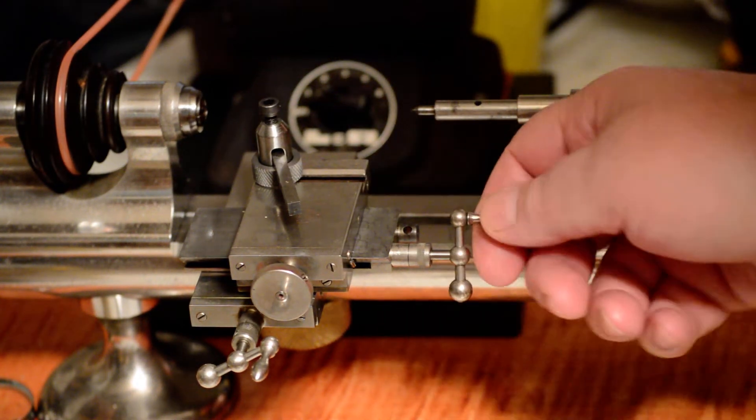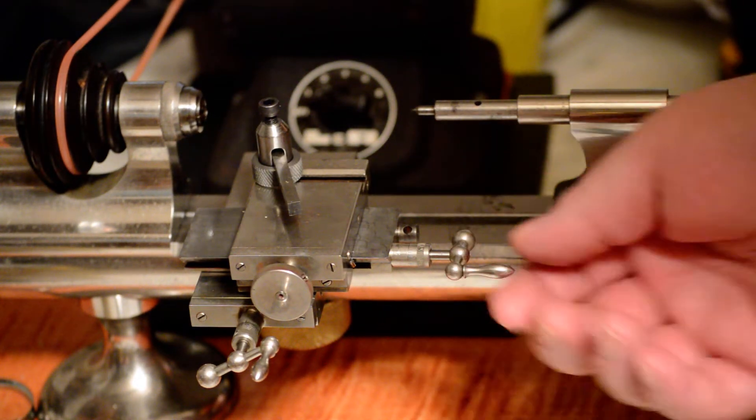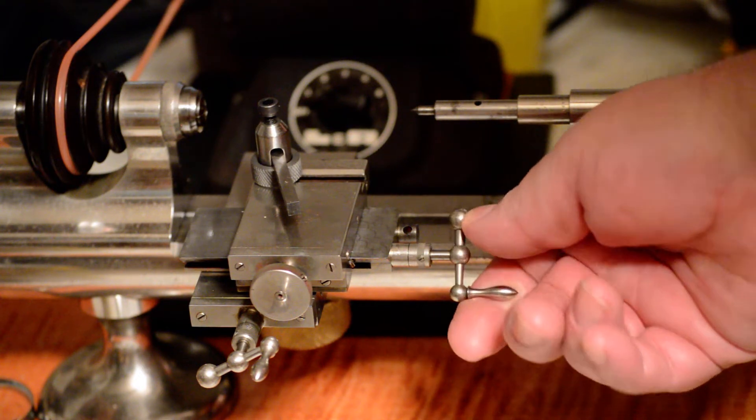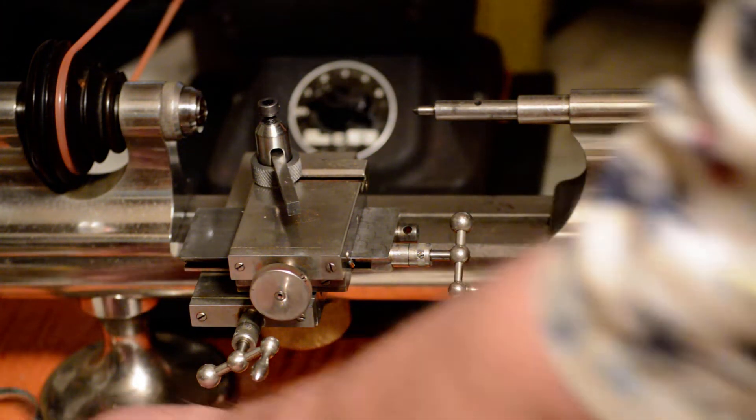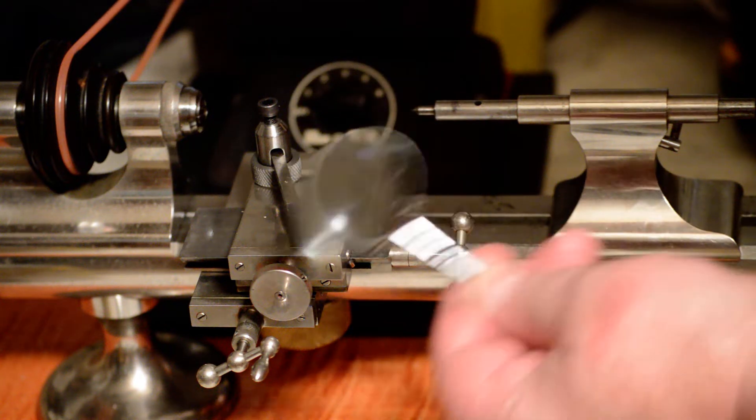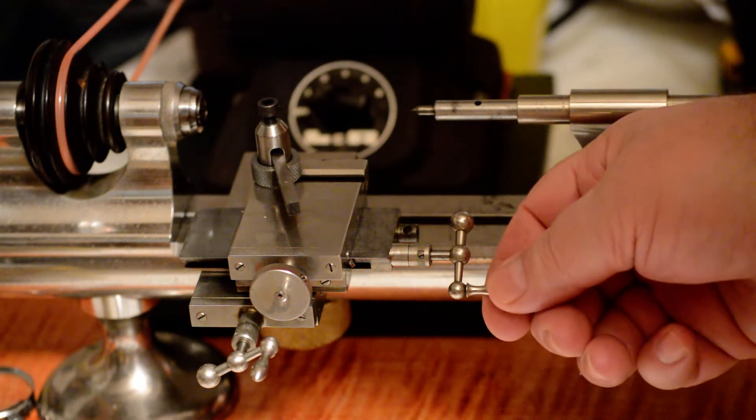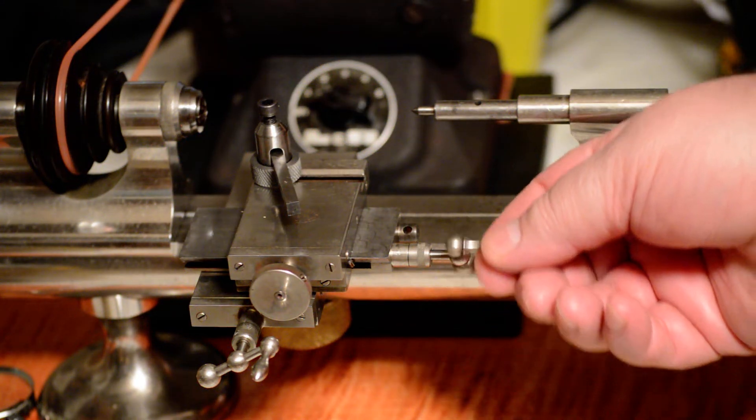So that means when I get the backlash out, see when it's loose like that, that's backlash, but when I get the backlash out and I look at this scale and I use a magnifying glass with this little scale here and if this is zero here and I turn this one revolution...